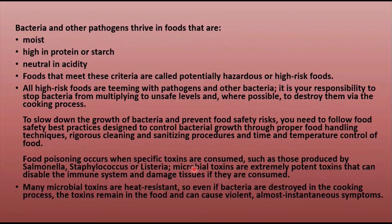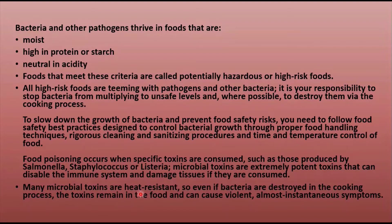Food poisoning can occur when specific toxins are consumed — that is called food intoxication. Such toxins are produced by organisms like Salmonella, Staphylococcus, or Listeria. Microbial toxins are extremely potent and can disable the immune system and damage tissues. The best example is Clostridium botulinum, which causes botulism — a result of the botulinum neurotoxin it produces. Many microbial toxins are heat resistant, so even if bacteria are destroyed in cooking, the toxins remain in the food and can cause violent and almost instantaneous symptoms.